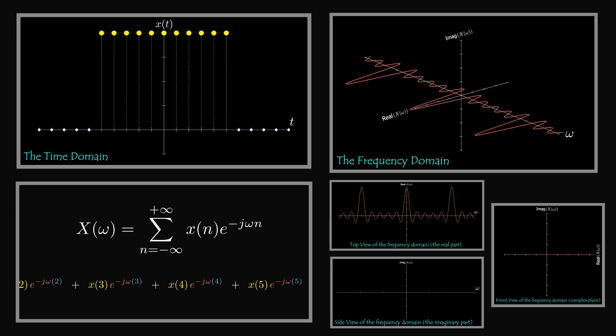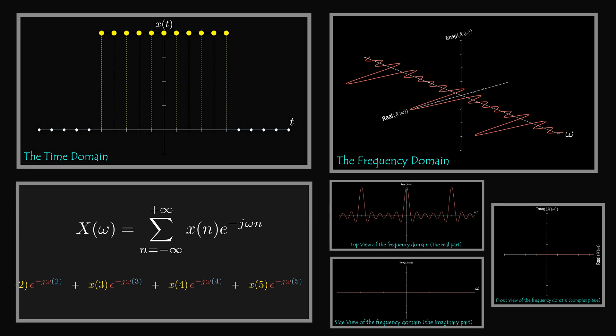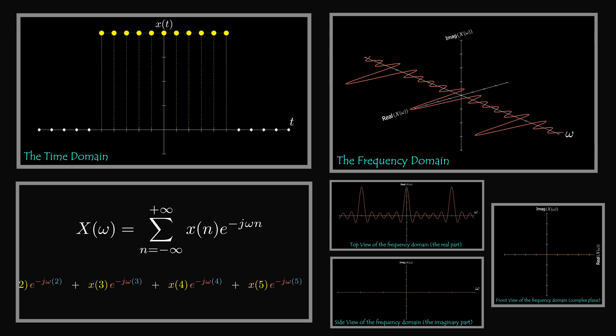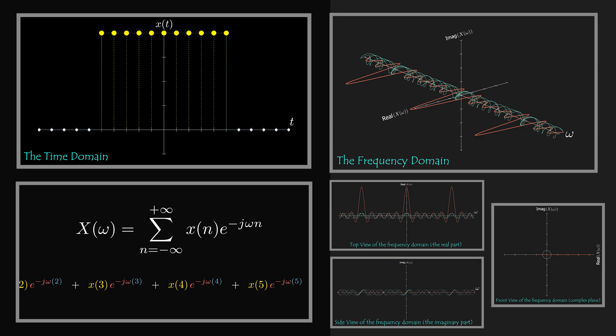Unlike continuous time, the discrete time Fourier transform is a finite summation of a finite number of complex exponentials. That's because the time domain signal is defined only on certain points in time. Since n is an integer, the frequency domain of a discrete signal is a summation of harmonically related complex exponentials whose exponents are integer multiples of each other.